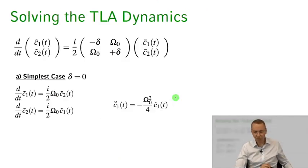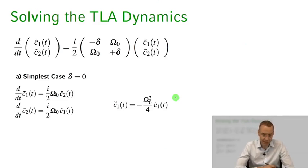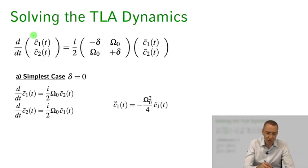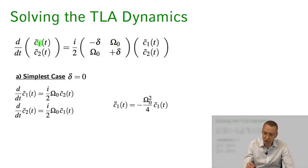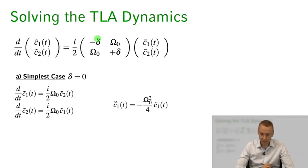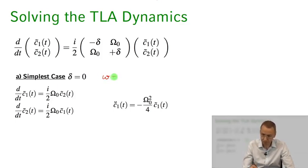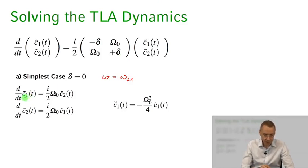Using this ansatz and plugging it into our differential equations, we can get rid of the fast oscillating term e to the i delta t and arrive at a set of differential equations for the state amplitudes c1-tilde and c2-tilde. These are described by a 2x2 coupling matrix where the off-diagonals contain the Rabi frequency — coupling state 1 to state 2 and vice versa — and the diagonals contain the detuning, minus delta and plus delta. Now let's look at the simplest case: the two-level atom on resonance, where the light field frequency matches the atomic resonance frequency, so omega equals omega21.